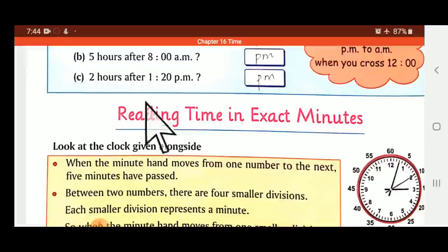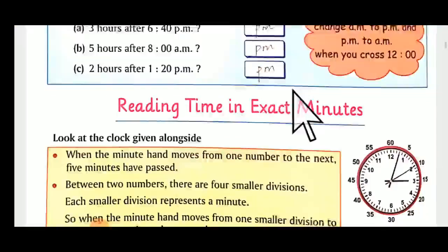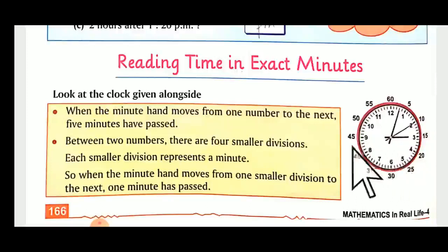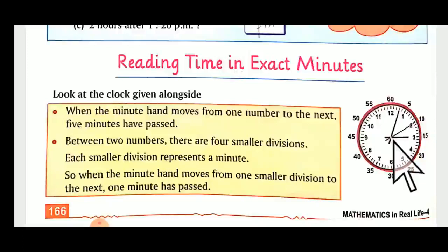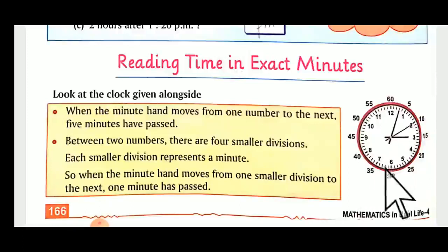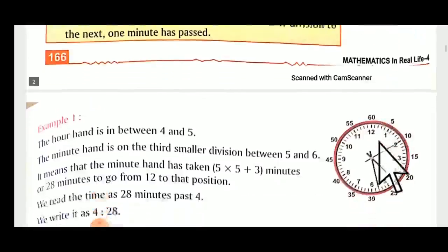Two hours after one twenty PM — so it will be three twenty PM. Now, how will you read the time exactly in minutes? As said earlier, the shorter hand shows the hour, then comes minutes, then seconds. For one it is five, for two it is ten, for three it is fifteen, for four it is twenty — like that, for nine it is forty-five. We use table of five here.